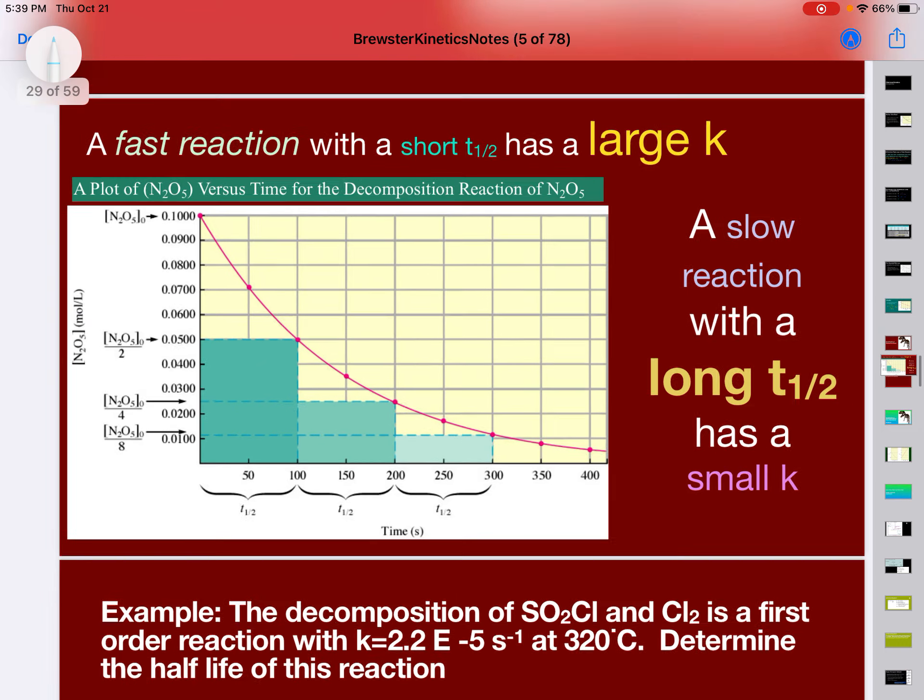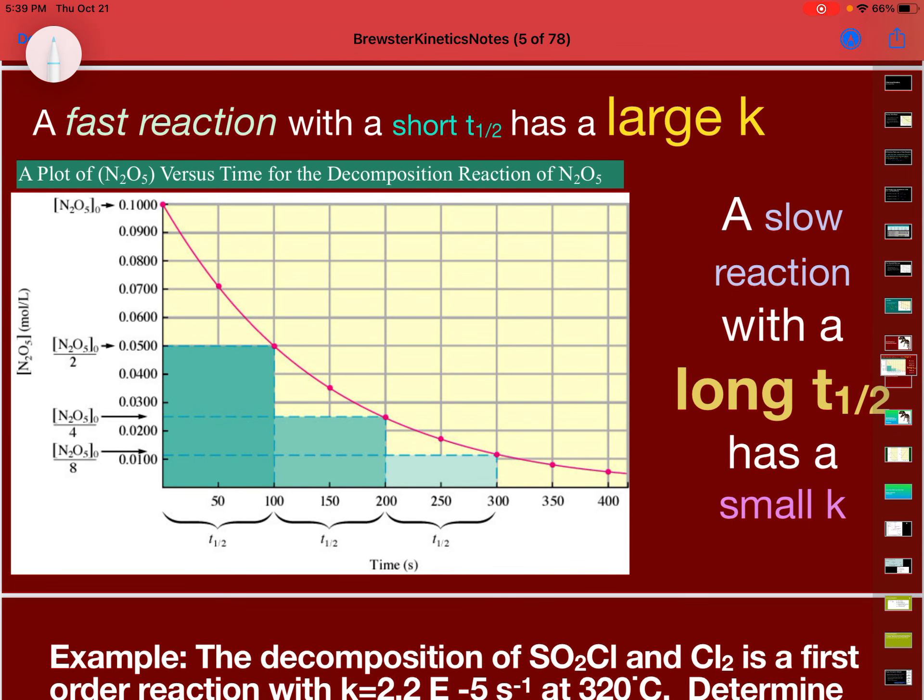And then I gave you this statement here, that a fast reaction with a short T1/2 has a large K, and a slow reaction with a long T1/2 has a small K.